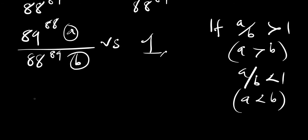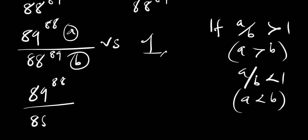So next, we have 89 raised to the power of 88, divided by 88 raised to the power of 89, and we can write 89 as 88 plus 1.